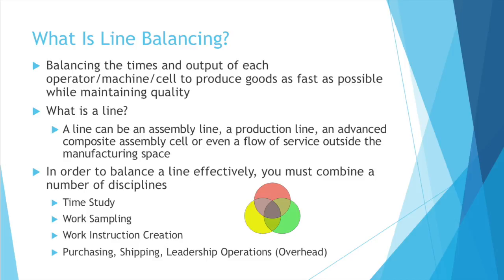So what is a line? A line can be an assembly line, a production line, an advanced composite assembly cell, or even a flow of service outside the manufacturing space. People at fast food restaurants have to balance their lines too, or you're going to wait on your food longer than you should.